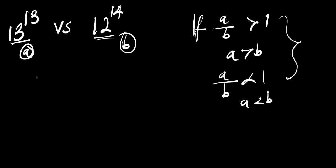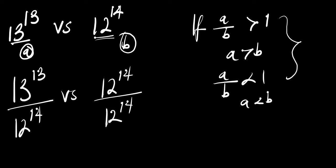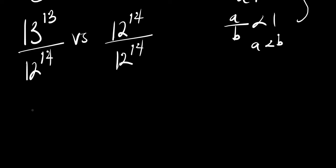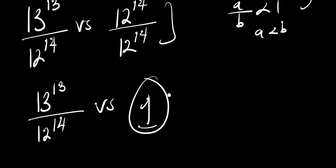In order to do that we can simply divide a by b. So we are going to have 13^13 divided by 12^14 versus 12^14 divided by 12^14. This gives us 13^13 divided by 12^14 versus 1. So we are now comparing everything to 1.